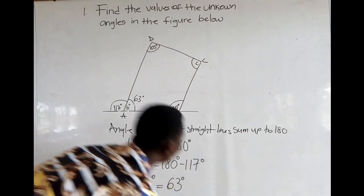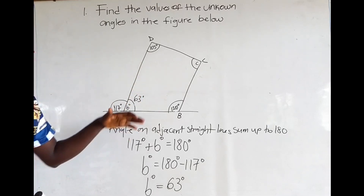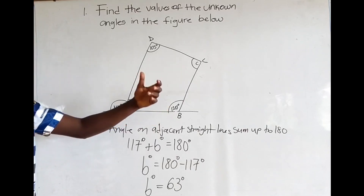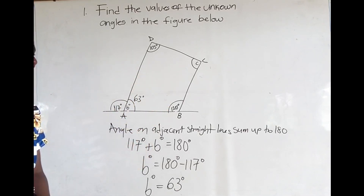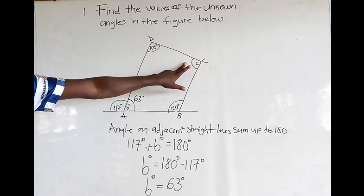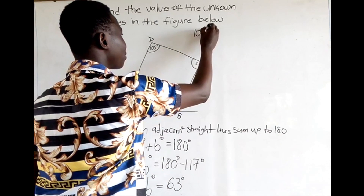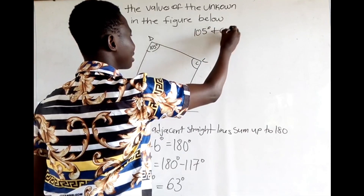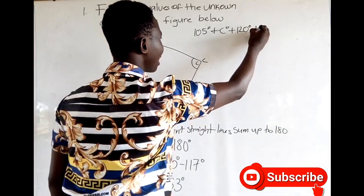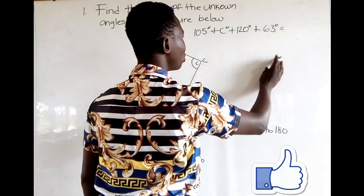One property of a quadrilateral is that the sum of interior angles of a quadrilateral sums up to 360. So what we are going to do is add this side plus this side plus this side plus this side and equate it to 360. We get 105 degrees plus c degrees plus 120 degrees, plus b which we know to be 63 degrees, is equal to 360.